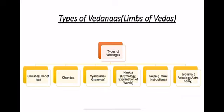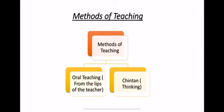Now, what were the methods of teaching in Vedic culture? In the Vedic era, as I already told you, nothing was written anywhere. So the first method was oral teaching — directly from the lips of the teacher. The second method was Chintan — thinking. For example, after the teacher said something, you thought about it and then remembered it. These were the methods of teaching in the Vedic era of ancient India.